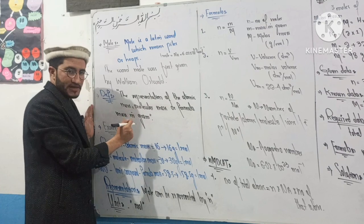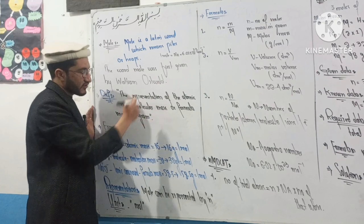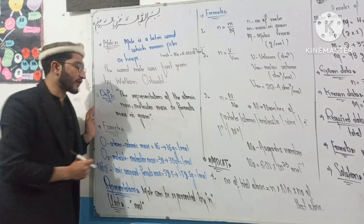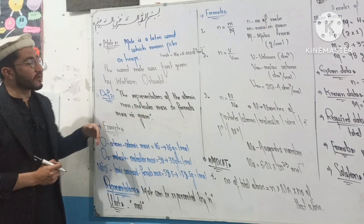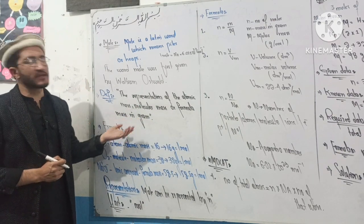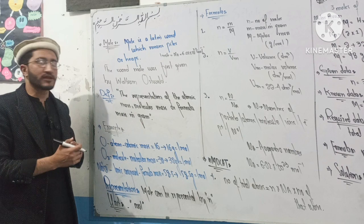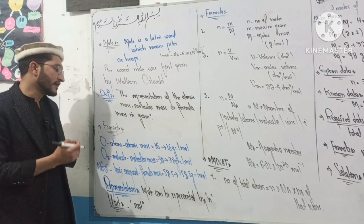The mole can represent molecular mass, formula mass, and molar mass. These representations allow us to work at the level of chemical substances.